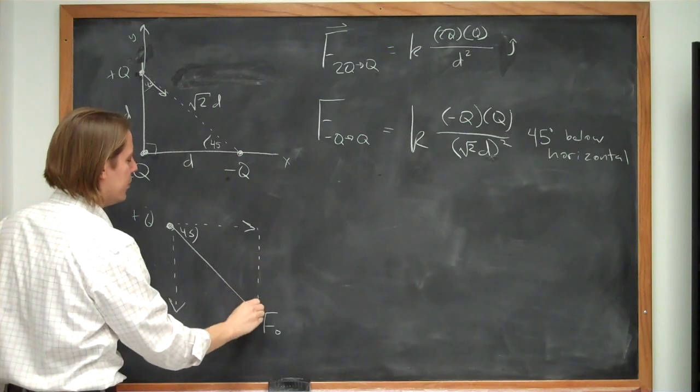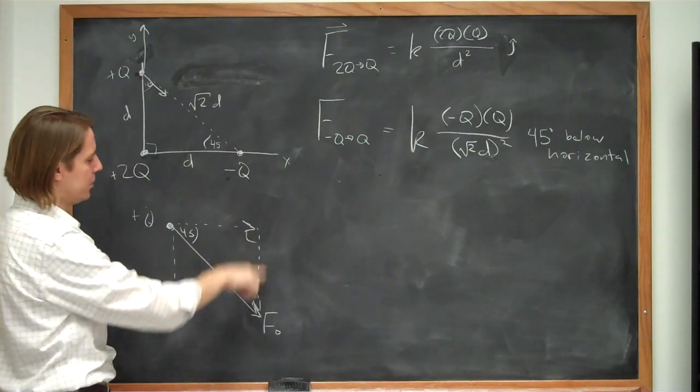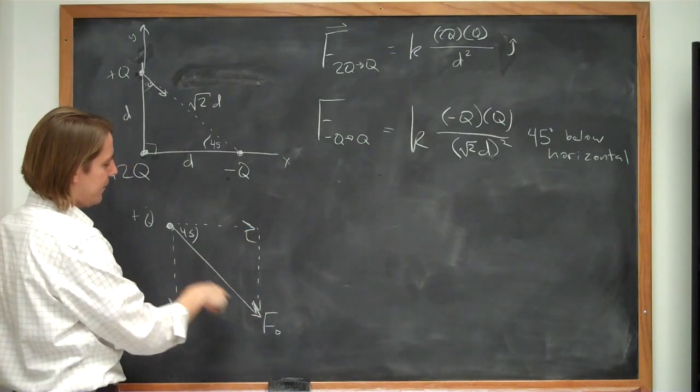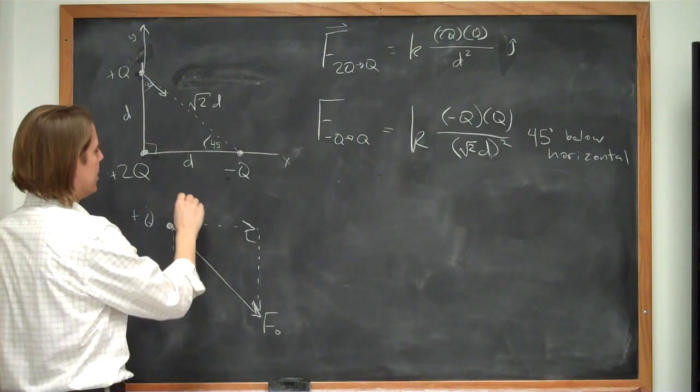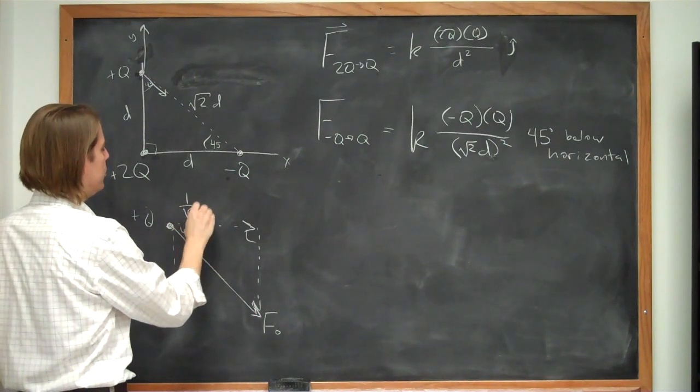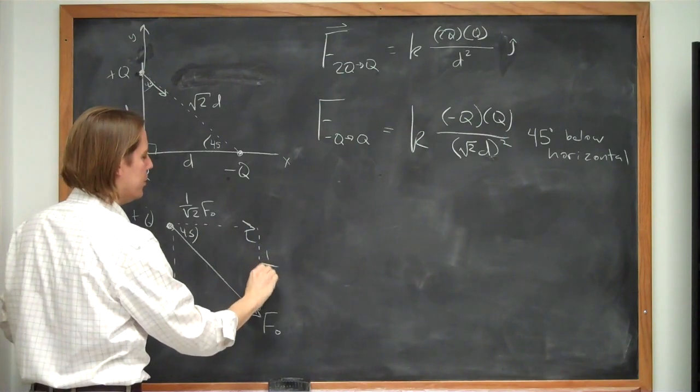And we know that this is 45 degrees. So you can redraw this one over here. And again, you have a right triangle. So if this is f naught, then this must be 1 over the square root of 2 f naught. And this must be 1 over the square root of 2.